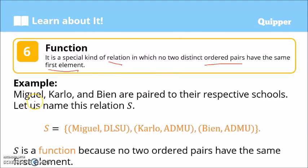Example: Miguel, Carlo, and Bien are paired to their respective schools. Let us name this relation S because schools. Capital letter S. So S is equal to Miguel to DLSU. This is his school. This is the student: Miguel, Carlo, and Bien. Miguel, next Carlo associated to ADMU, Bien to ADMU.